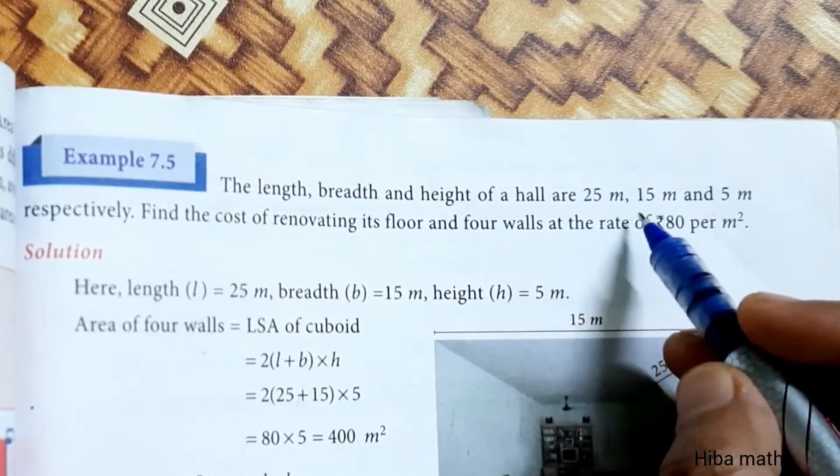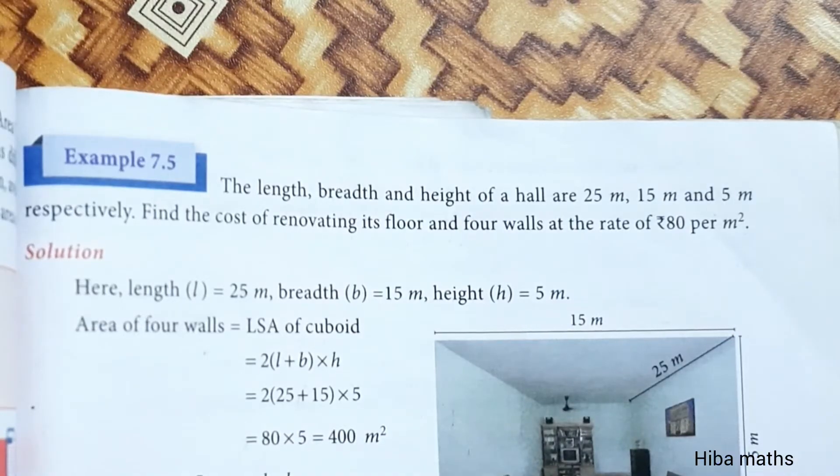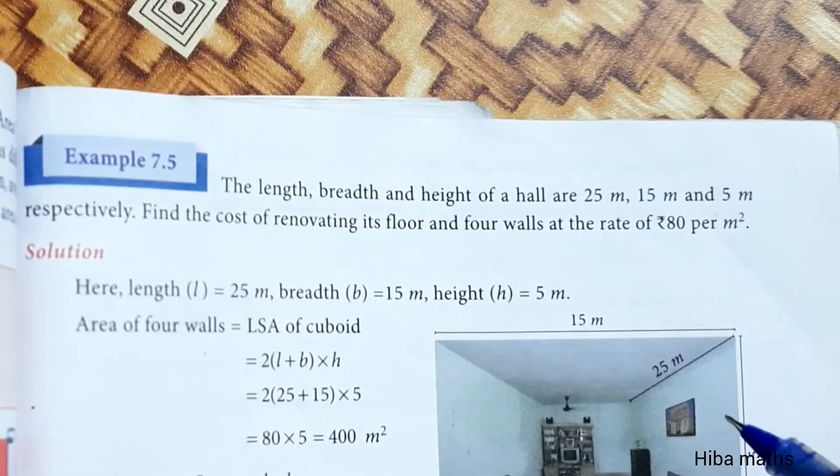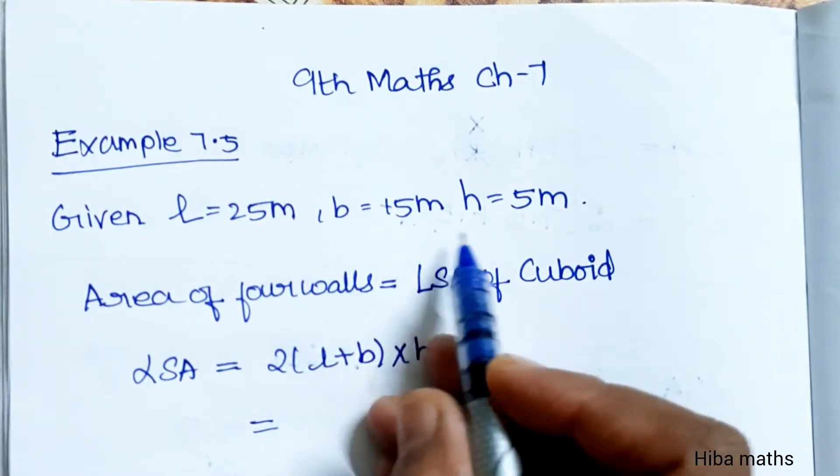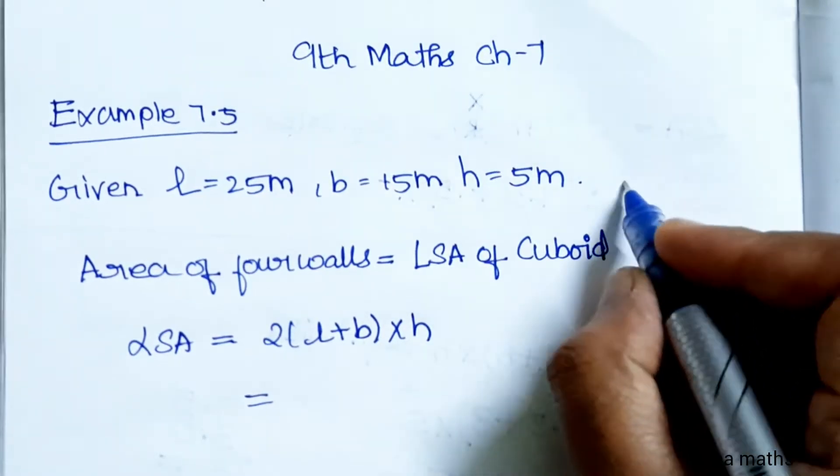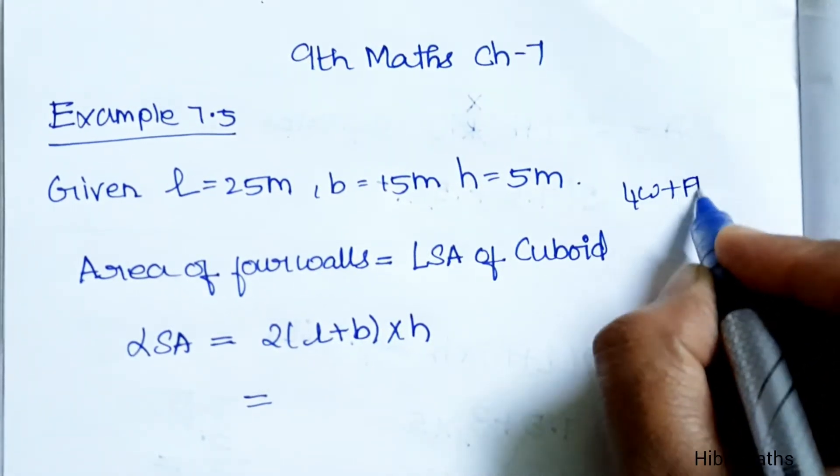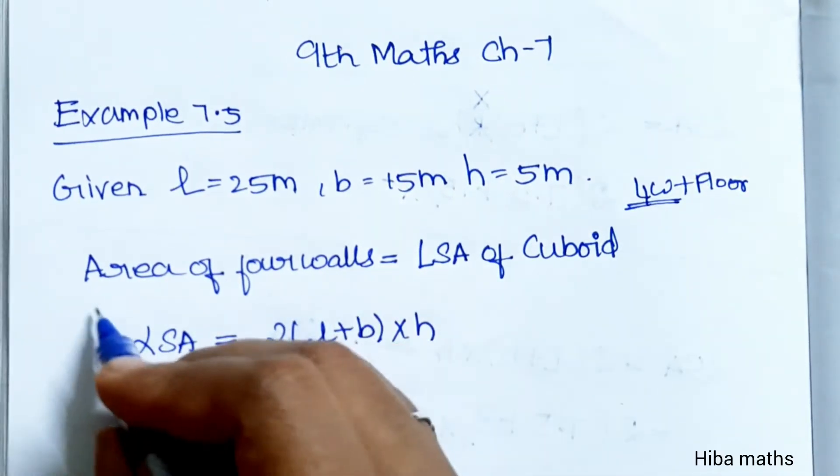So you can see, the length, breadth and height of the hall are 25m, 15m and 5m. For the four walls and floor, we need to find the area of four walls.